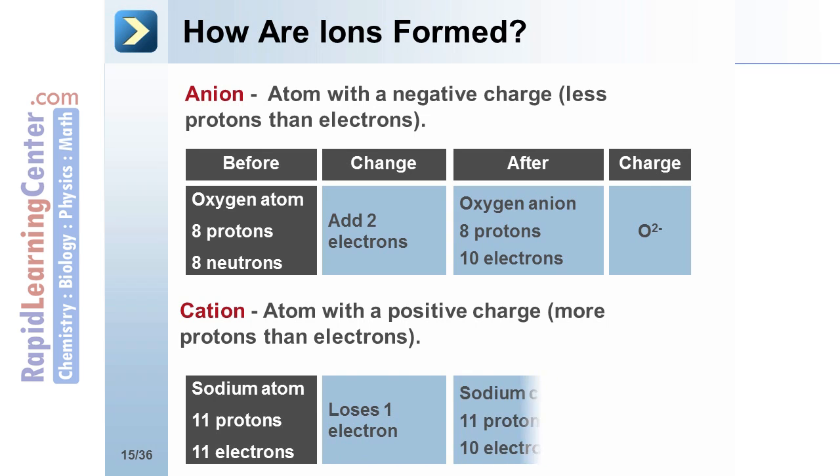When one electron is removed, it now has more protons—more positive than negative electrons. The atom now has a positive one charge.